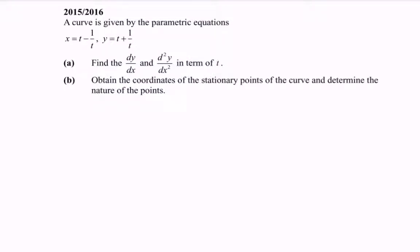Hello everyone. Here we have an example for the topic of differentiation. A curve is given by the parametric equations x equals t minus 1 over t, y equals t plus 1 over t. Find dy/dx and the second derivative in terms of t. Obtain the coordinates of the stationary points of the curve and determine the nature of the point.